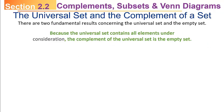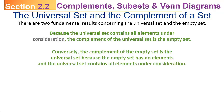There are two fundamental results concerning the universal set and the empty set. Because the universal set contains all elements under consideration, the complement of the universal set has to be the empty set — the complement of everything would be nothing. Secondly, the complement of the empty set is the universal set, because the empty set has no elements and the universal set contains all the elements. So the complement of nothing is everything, and the complement of everything is nothing.